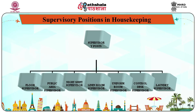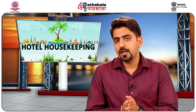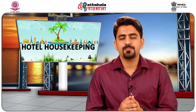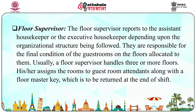Let's study the various supervisory positions in the housekeeping department. The department usually has seven supervisory posts allocated at different areas for smooth operations. We will explain and study the various positions and their specific duties and responsibilities. Starting with the first — the floor supervisor. The floor supervisor reports to the assistant housekeeper or the executive housekeeper depending upon the organizational structure being followed. They are responsible for the final condition of the guest rooms on the floor allocated to them. Usually, a floor supervisor handles three or more floors.